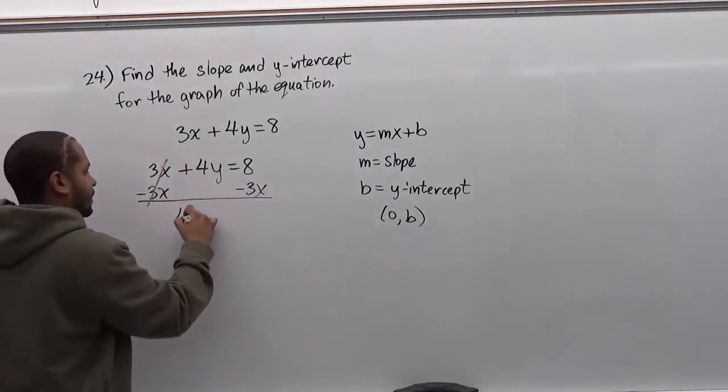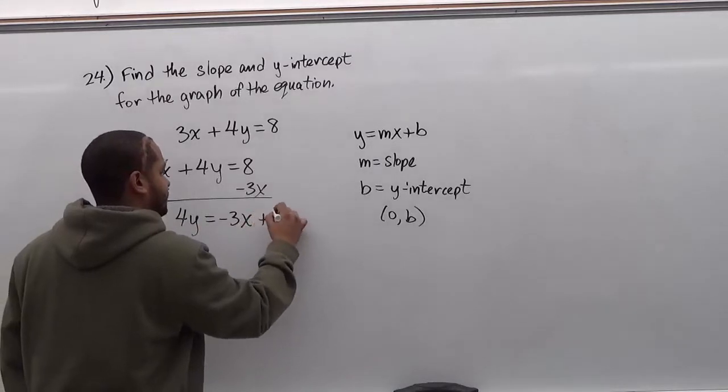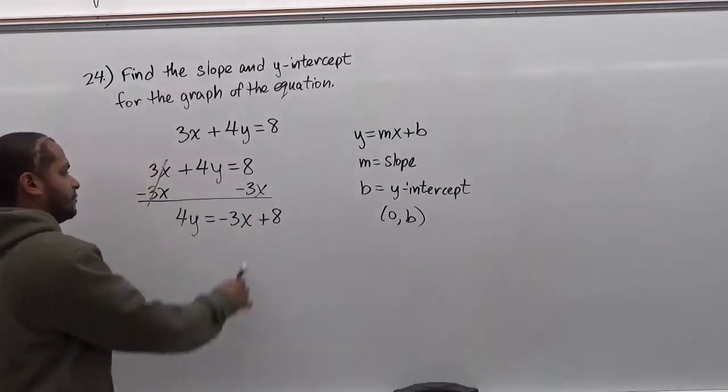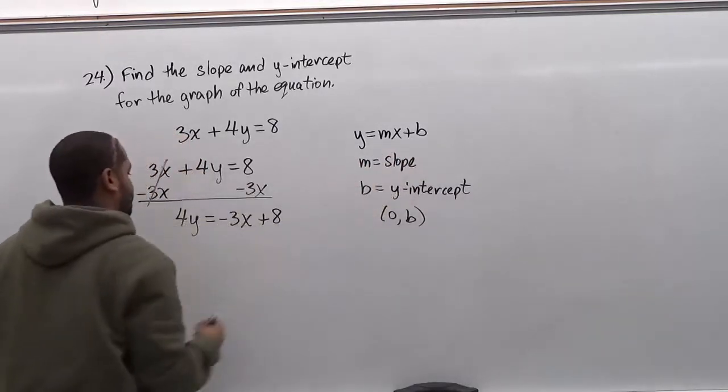These two will cancel out. We have 4y equals negative 3x plus 8. And here I'm leading with the x term because in the slope formula we see mx comes before the y-intercept.